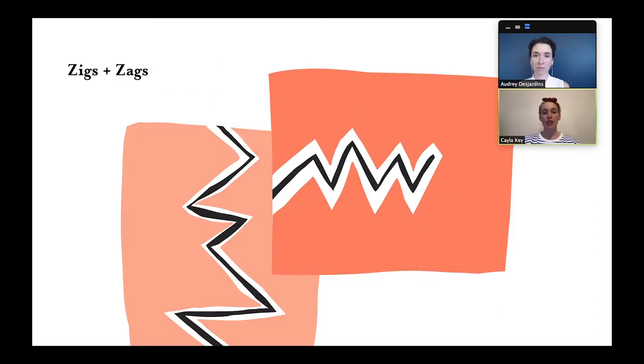Zigs and zags represent elements of surprise in our process. While zigs yielded unexpectedly useful results, zags were more common and represent moments when we were lulled into believing that a line of inquiry was on a fast track to somewhere really exciting, only to realize that our efforts were spent moving in the opposite direction.